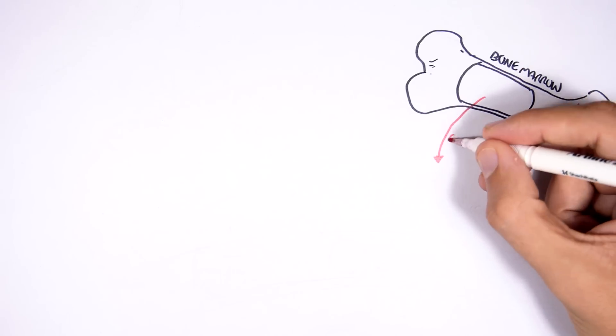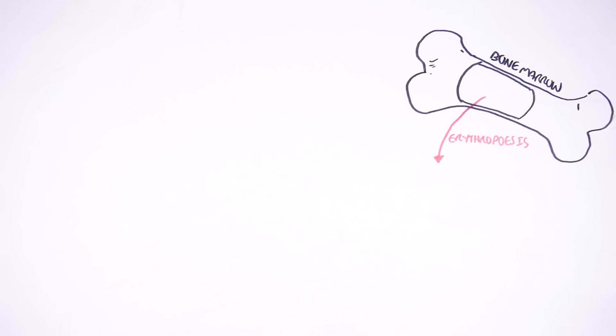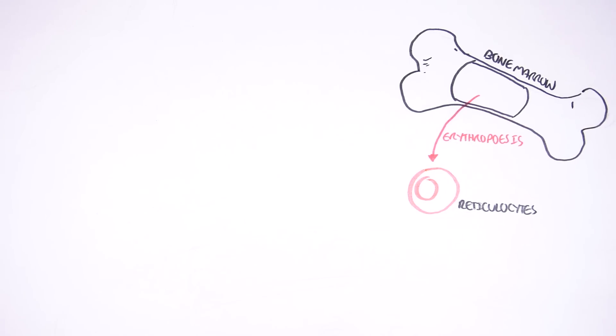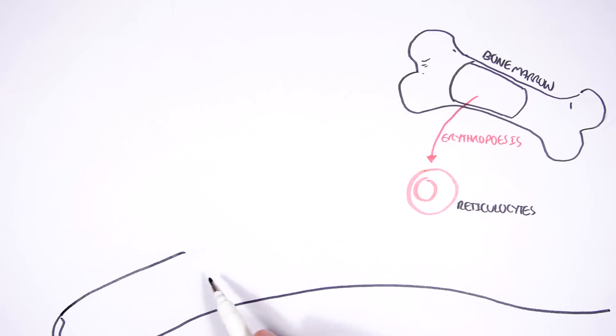So we begin with erythrocytes or red blood cells that are produced in the bone marrow through a process known as erythropoiesis. Stem cells in the bone marrow will give rise to early erythroblasts and then to eventually reticulocytes. And then reticulocytes will form erythrocytes which are our red blood cells.